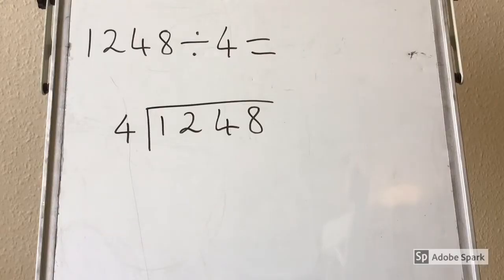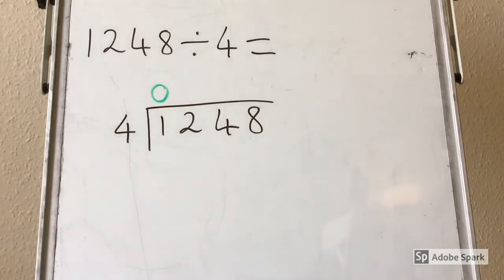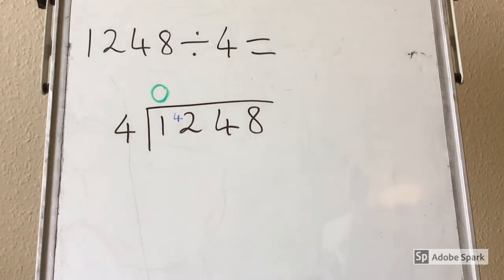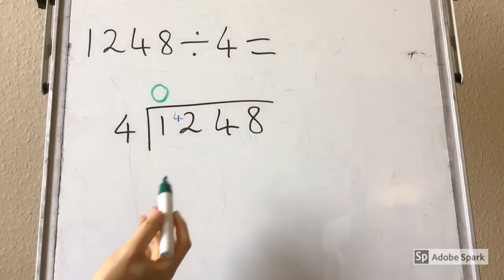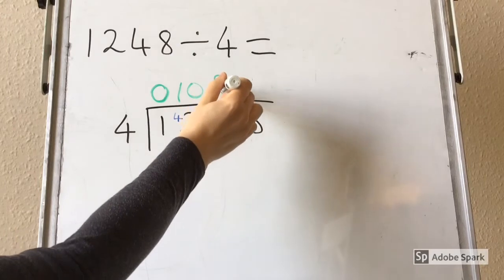So how many times does 4 go into 1? It doesn't at all, and I am going to carry across my 4. Then I am going to ask myself how many times does 4 go into 42? I know it goes into 40 ten times, so I should put my 10 up here. Hmm. Is this correct? Can you spot what I have done wrong?